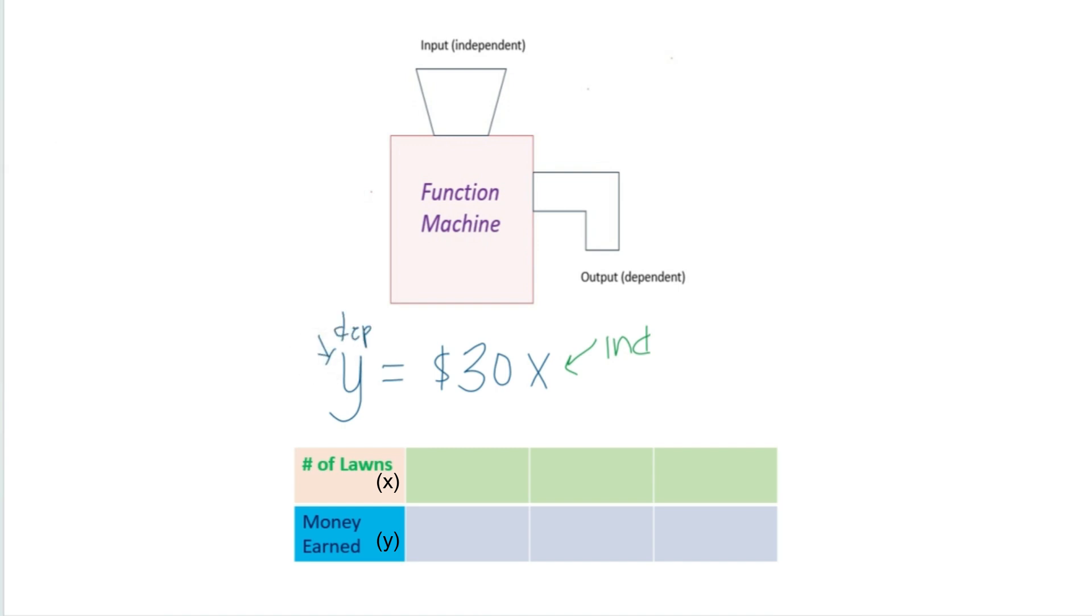If we put in our function one, if he does one lawn, we put that in our function, and he's going to make $30. Let's say he does three lawns. Put our three lawns here, goes through our machine, and he makes $90.